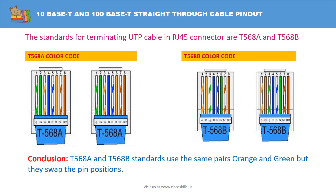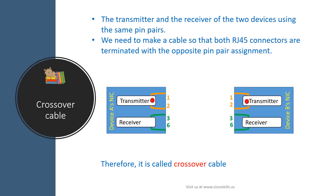In conclusion, both T568A and T568B standards use the same pin pairs — orange and green — but they swap the pin positions. Now let's look at a case where the transmitter and receiver of two devices use the same pin pairs. In order to connect the transmitter of one device to the receiver of the other device, we need to make a cable so that both RJ45 connectors are terminated with opposite pin pair assignments.